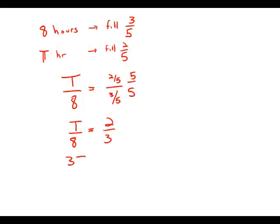Cross multiplying, 3t equals 16. t equals 16 divided by 3.